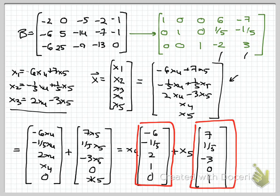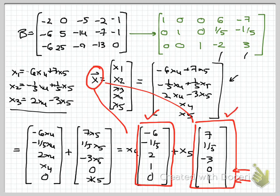These two vectors form a linearly independent set — you can see that from the fourth and fifth entries — and every solution to Bx = 0 is a linear combination of them, so they span the null space. That makes them a basis for the null space of B. To summarize: to find a basis for the column space of any matrix, go to echelon form, identify the pivot columns, and take those columns from the original matrix. To find a basis for the null space, solve Ax = 0 in parametric form; the numerical vectors appearing in that parametric form are a basis for the null space.